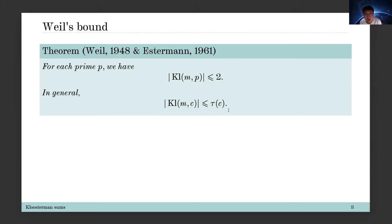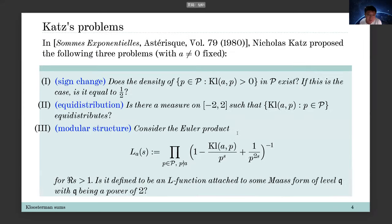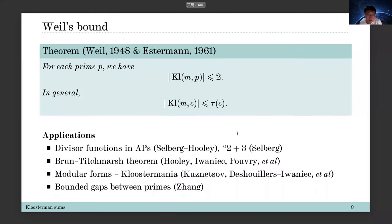Kloosterman sums are important and interesting for at least two reasons. First, they can be very powerful tools in many typical questions in analytic number theory. Also, they can be very interesting and mysterious objects with independent interest. So you can use Kloosterman sums as important tools, and also you can regard Kloosterman sums as interesting objects themselves.